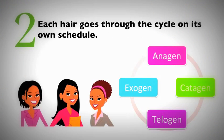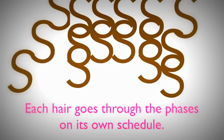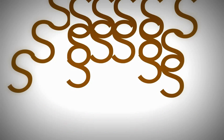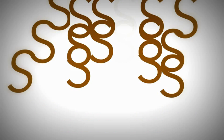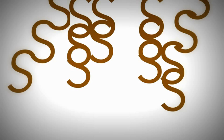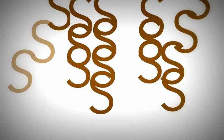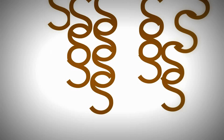Number two: each hair goes through its own growth cycle, independent of the hairs that surround it. Each hair is programmed to do its own thing — strands grow, rest, and fall on their own schedule and repeat the process again and again throughout your lifetime. For example, one strand may be in its second year of anagen while its neighboring strand is preparing to fall in exogen.